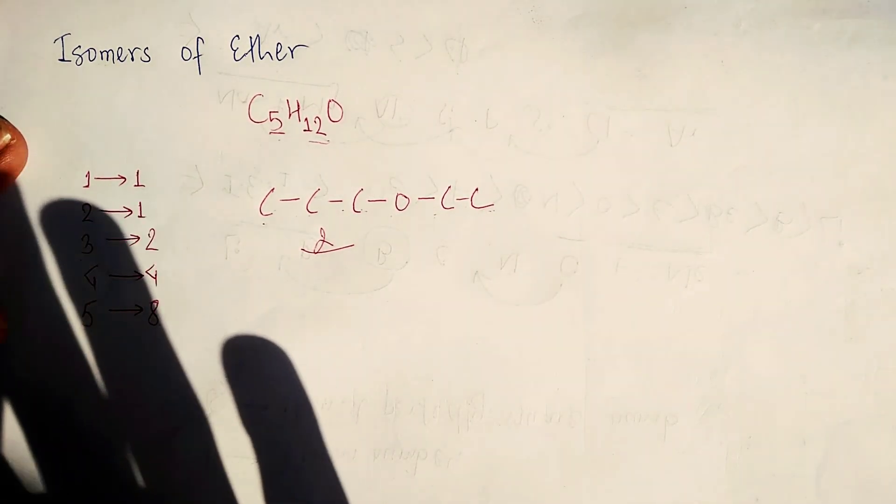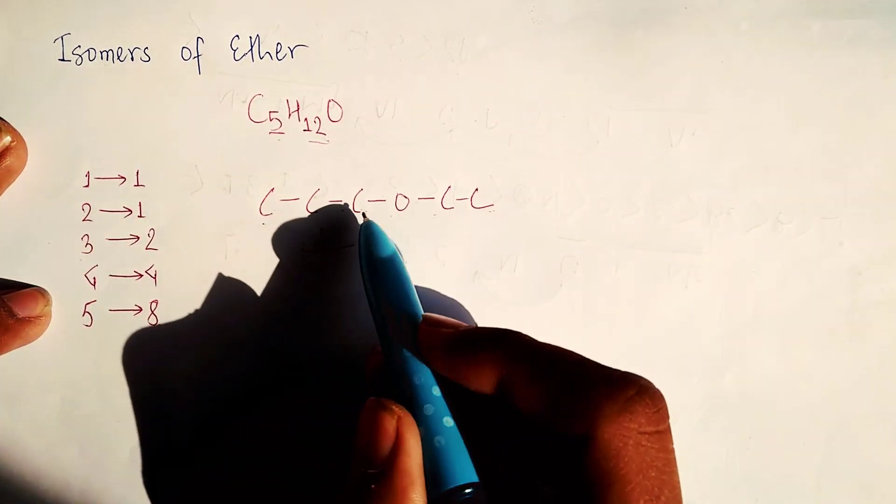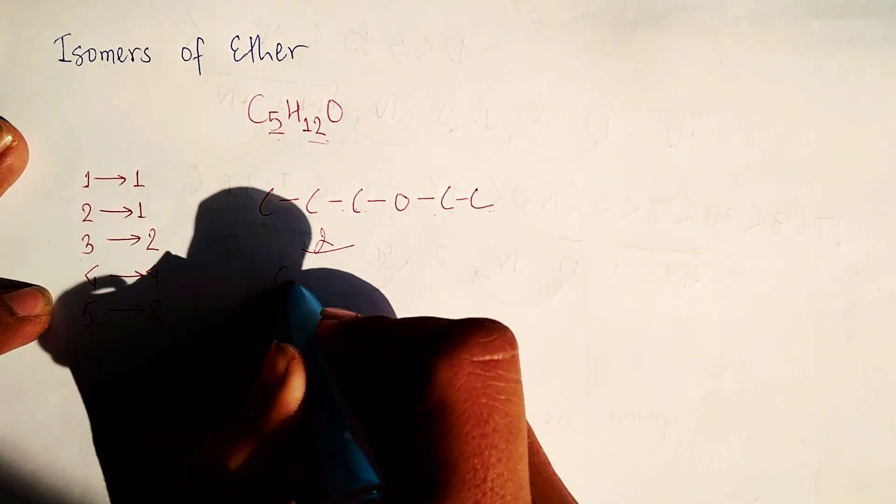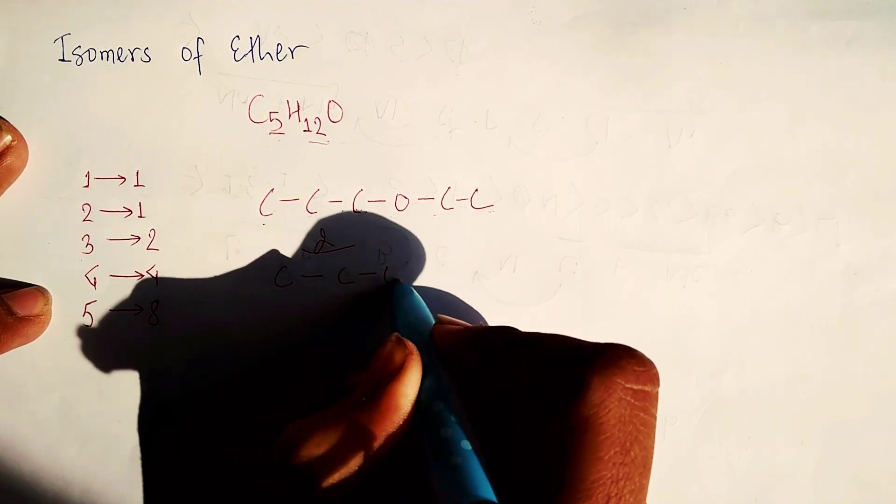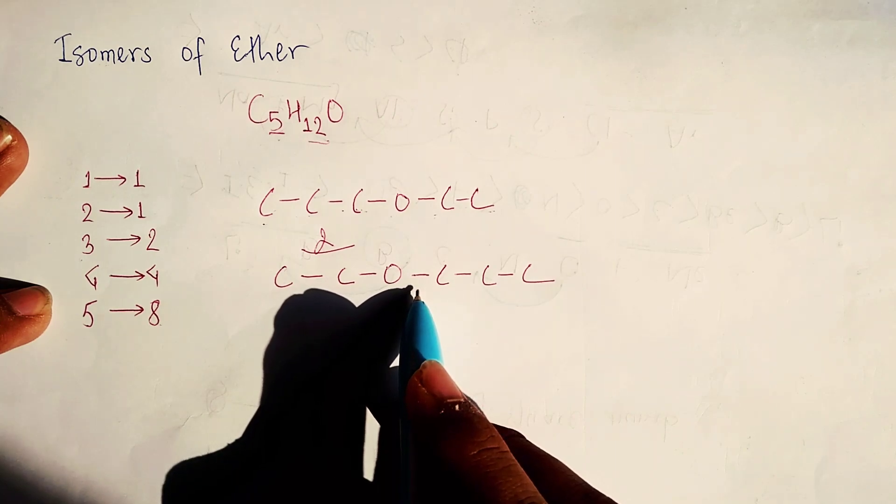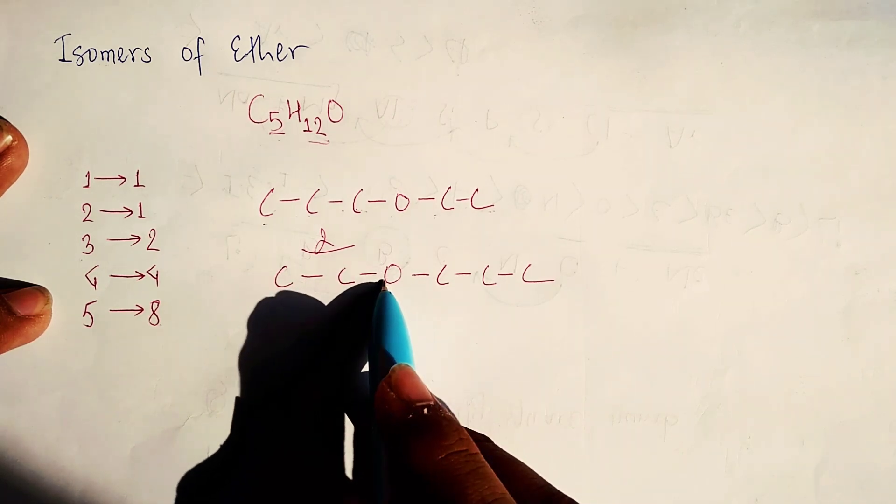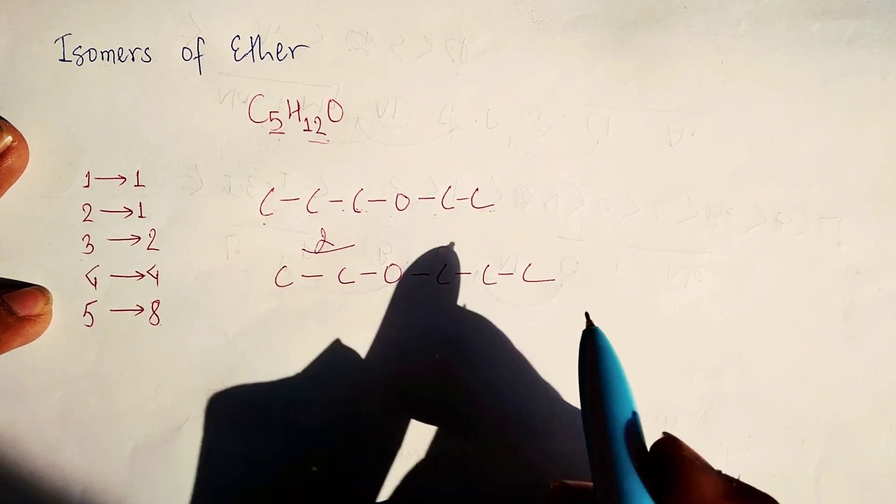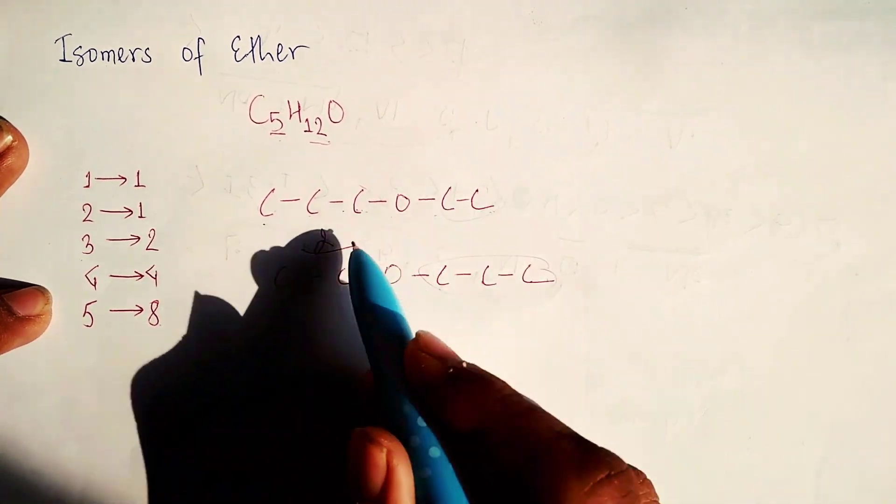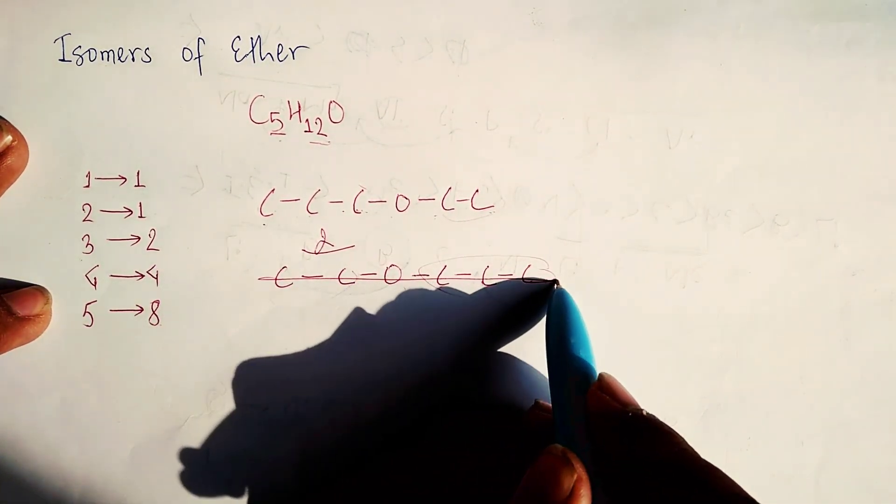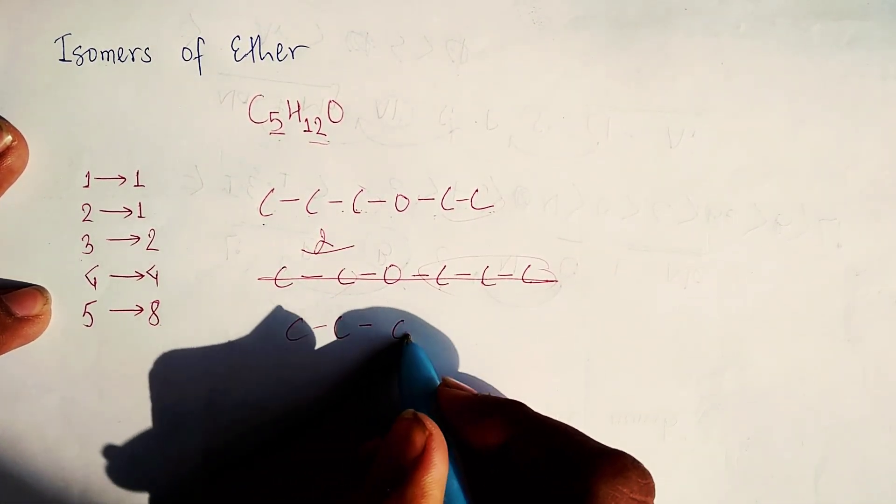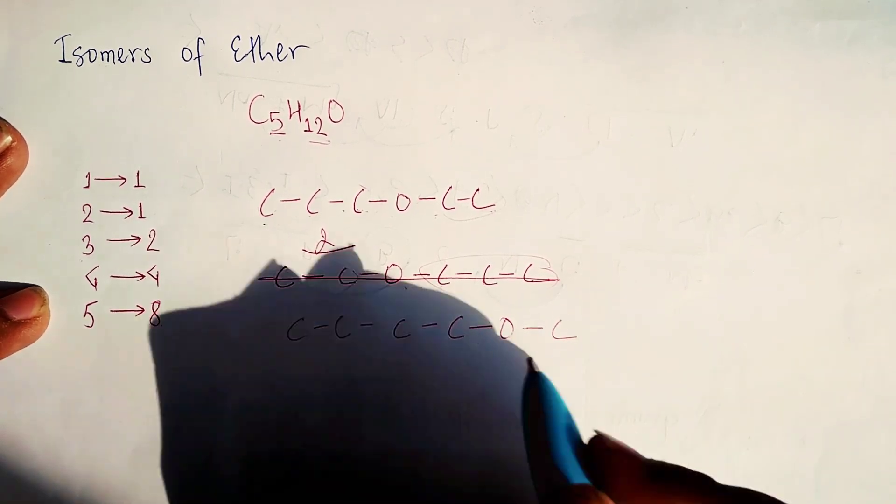Wait, it is not finished yet. Now we will change the number of carbons here and there. If you think C-C-O-C-C-C will be another form, you are wrong because there are 3 carbons here, also 3 carbons there, 2 carbons here and 2 carbons there - these are the same. So we will not make this. Now we will take this carbon on this side: 1, 2, 3, 4, then oxygen, and then this is also an ether.